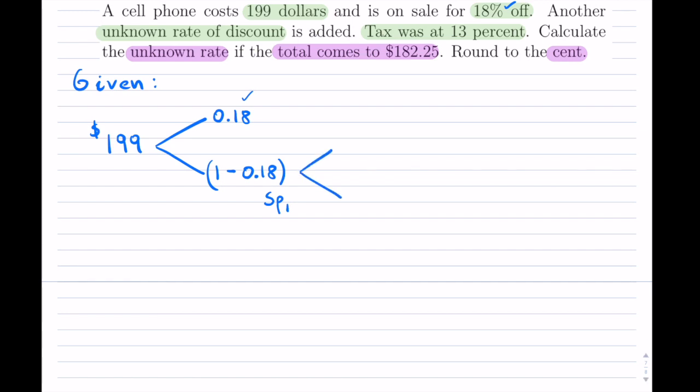So I'm going to branch off, but I do not know what this is. So I'll just simply say this is the rate of discount that I don't know what it is. And on the opposite branch, I will write 100% of the sale price minus the unknown discount here. And that would have given me the new sale price after the second discount.